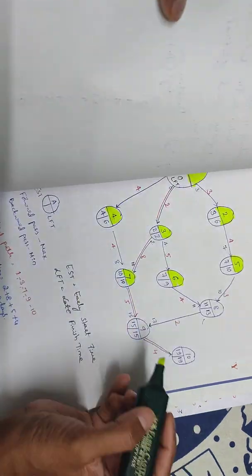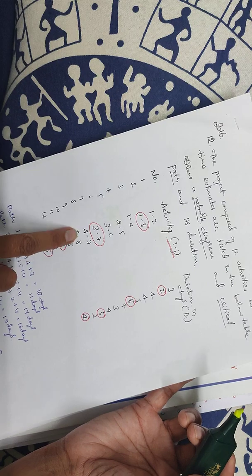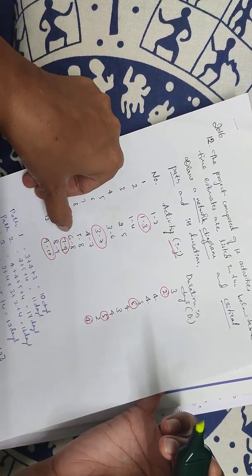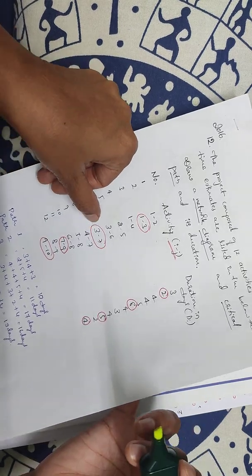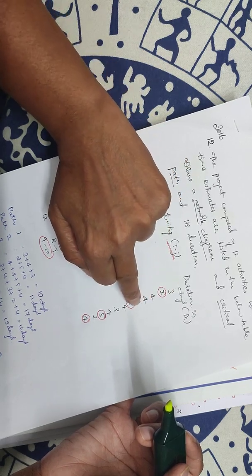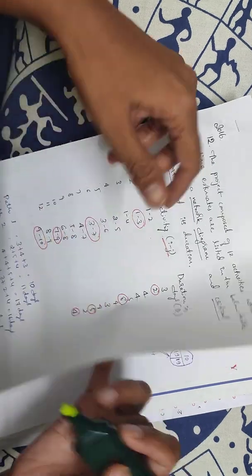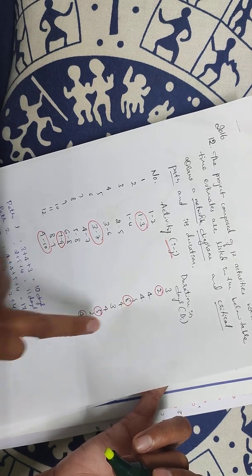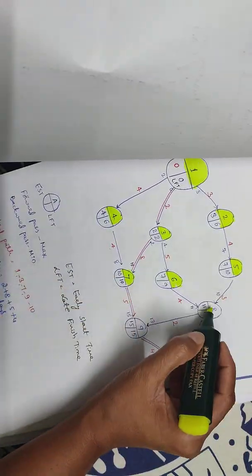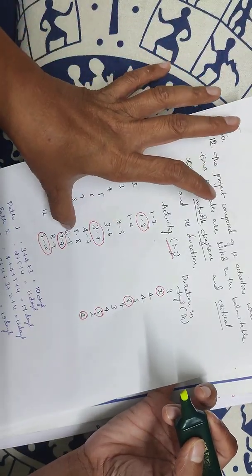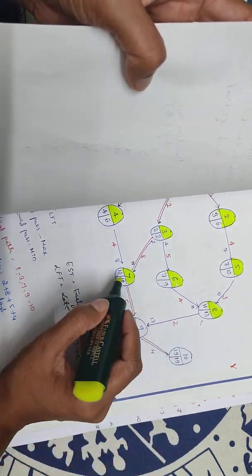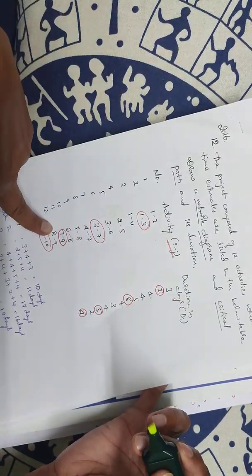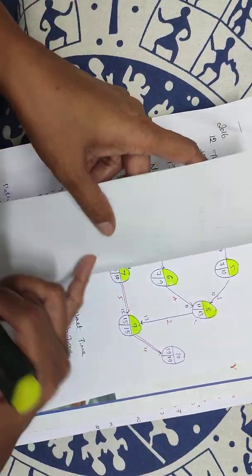4 to 7 is 4 days. 5 to 8, 6 to 8, 7 to 9, 8 to 9, 9 to 10. Let me check all connections: 3, 2, 4, 4 days. 5 to 8 is 4 days, 7 to 9 is 5 days, 8 to 9 is 2 days, 9 to 10 is 4 days.